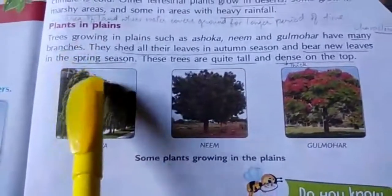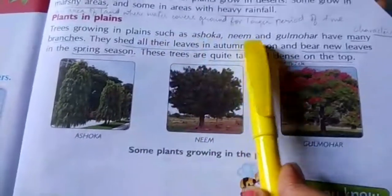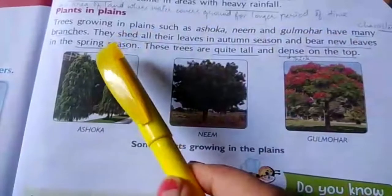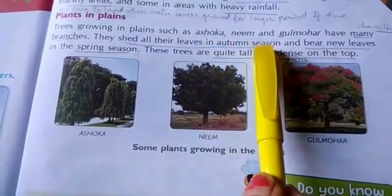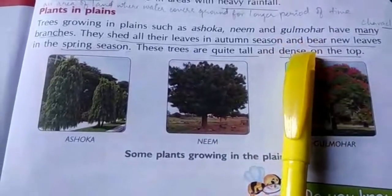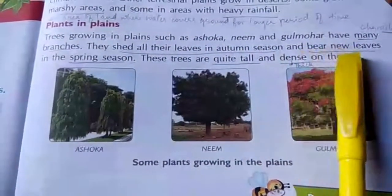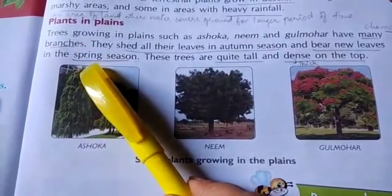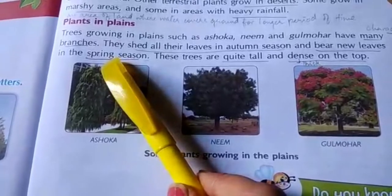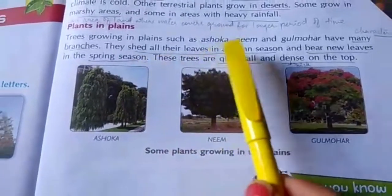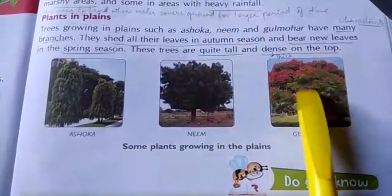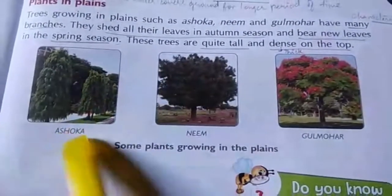Trees growing in plains such as Ashoka, Neem, and Gulmohar have many branches. They shed their leaves during autumn season — the season that comes after summer when leaves fall off completely from trees. They bear new leaves during spring season, which is after winter and before summer, when flowers bloom and trees begin to grow and reproduce. These trees are quite tall and dense on the top.